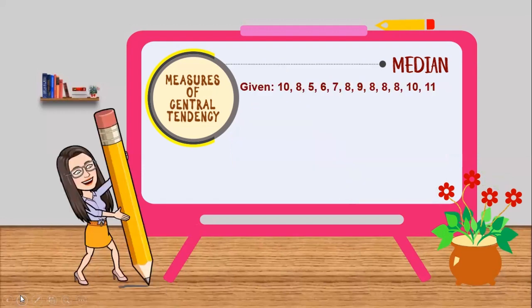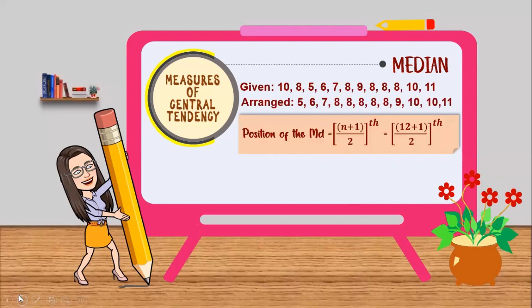The same values with the values that we solve for the mean. First thing that we need to do is to arrange the given values in ascending order, which means we need to arrange the values from lowest to highest. Then we solve for the median using the formula position of the median is equal to the quantity of n plus 1 over 2.